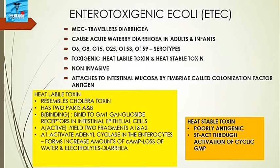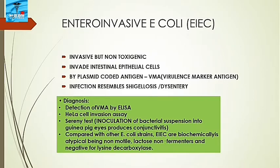The heat-labile toxin is similar to cholera toxin. It has two parts: B, the binding subunit, which binds to GM1 ganglioside receptors on intestinal epithelial cells; and A, the active subunit, which yields fragments A1 and A2. A1 activates adenylyl cyclase in enterocytes, forming increased amounts of cyclic AMP, leading to loss of water and electrolytes in large amounts, causing diarrhea. The heat-stable toxin acts through activation of cyclic GMP.